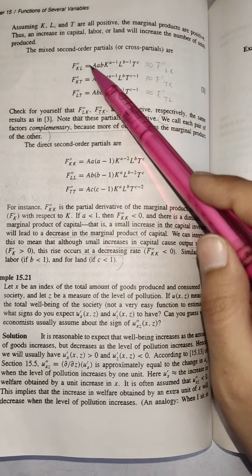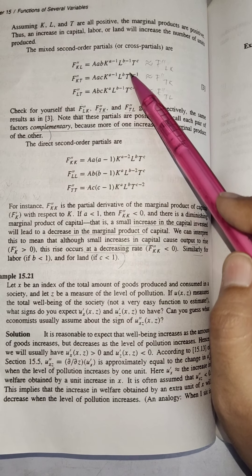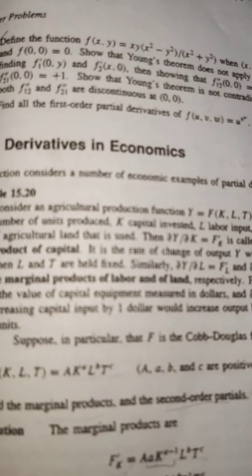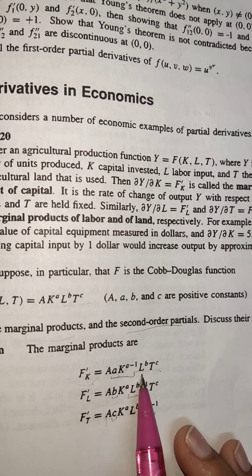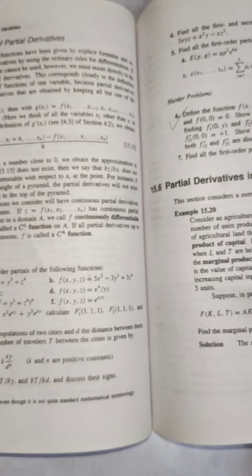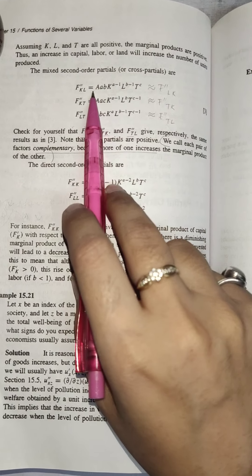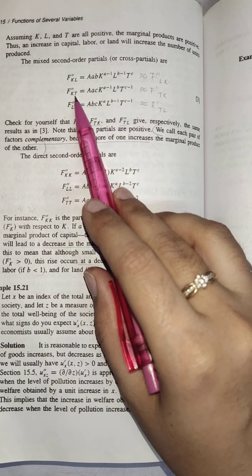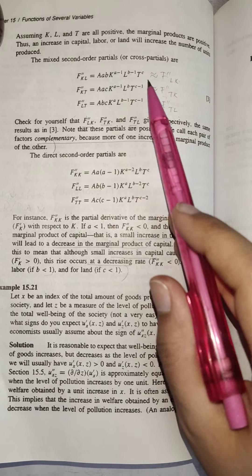For the cross partial f_kl, differentiating f_k with respect to l: everything remains constant except l^b, which differentiates to b · l^(b-1), giving the expression shown. Likewise for f_kt. Using Young's theorem, f_kl = f_lk, f_kt = f_tk, and f_lt = f_tl.